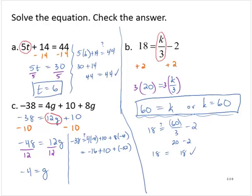Left to right, negative 16 plus 10 is negative 6. Plus negative 32 is negative 38. So that checks out. And so negative 4 is equal to g.